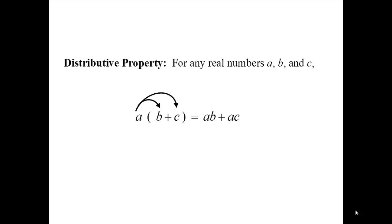The distributive property says, for any real numbers a, b, and c: a times the quantity b plus c equals a times b plus a times c.